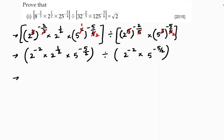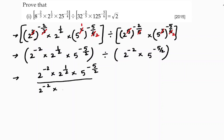Now I'll rearrange: 2 power minus 2 into 5 power minus 5 by 2 appears in both numerator and denominator. Observing this, 2 power minus 2 and 2 power minus 2 cancel, and 5 power minus 5 by 2 and 5 power minus 5 by 2 cancel directly.